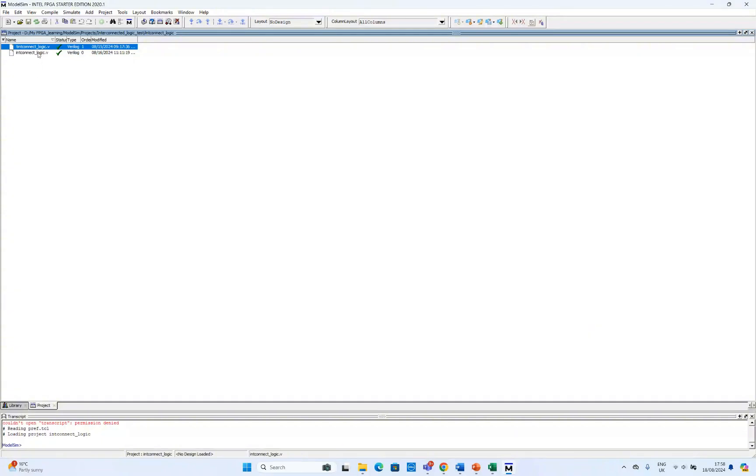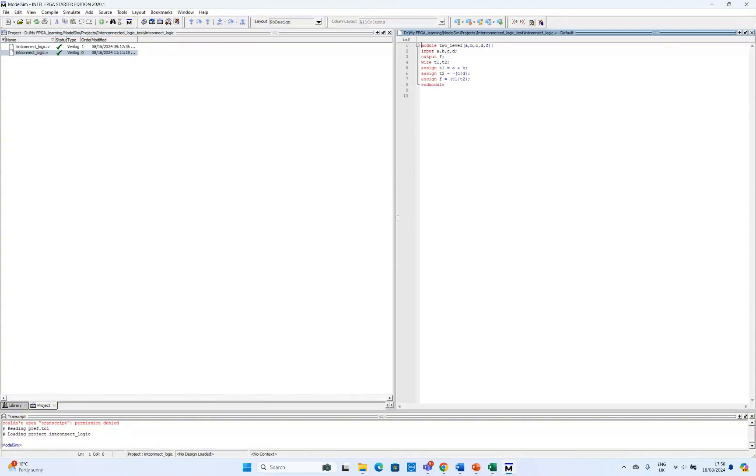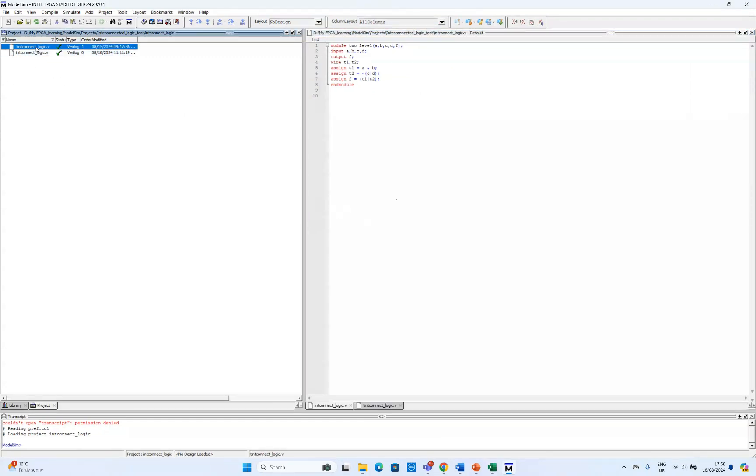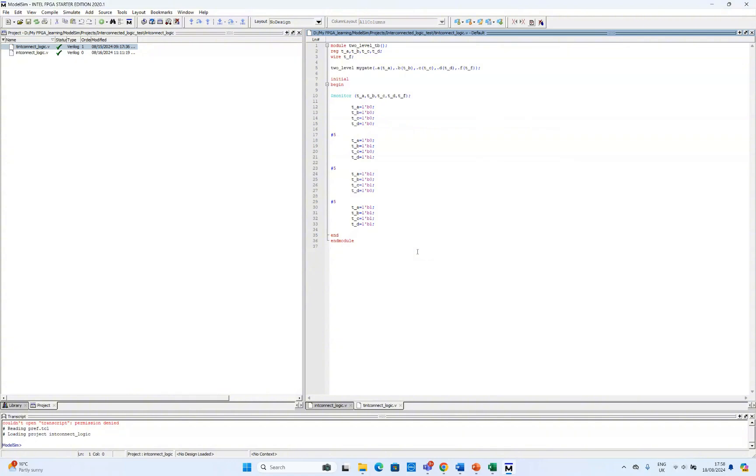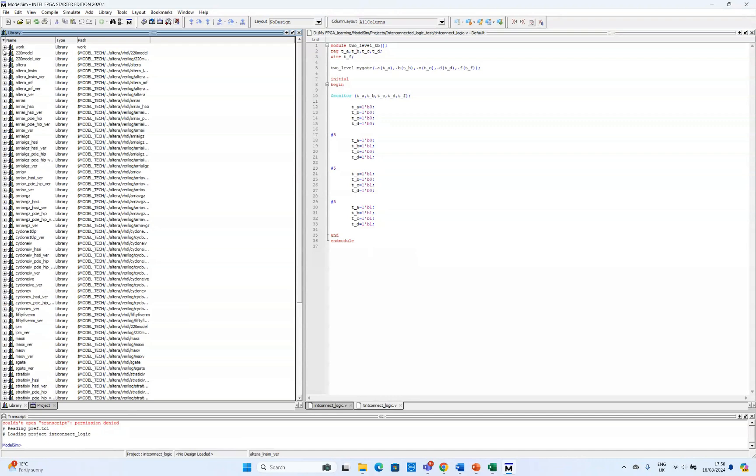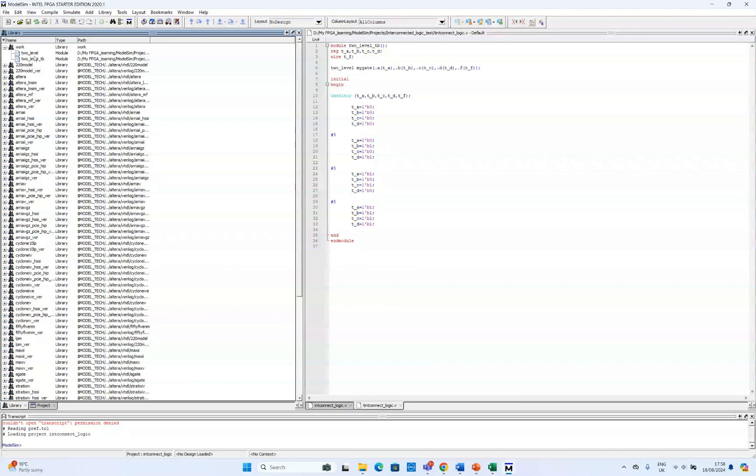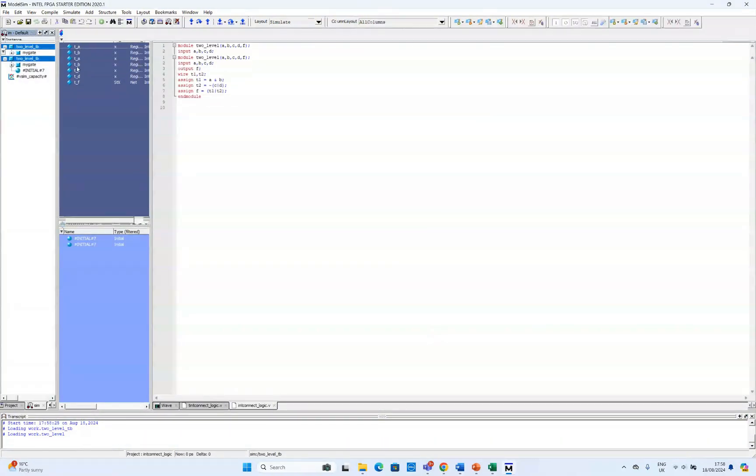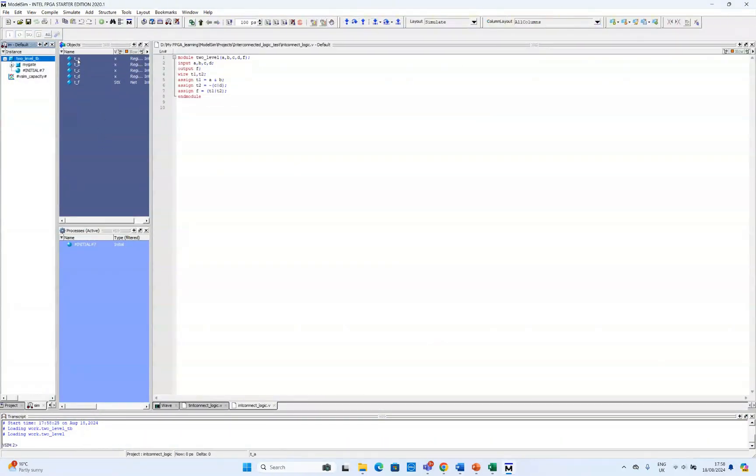For today we already prepared the Verilog code for the two-level logic example and we also prepared the test bench for this code. Now as we discussed in our previous video, if you go to the library and in the work folder and if you simulate it, it will open the simulation window. Then you can add the signals to the simulation.